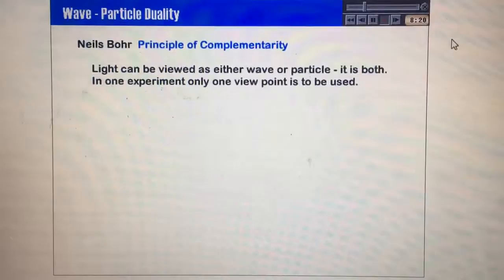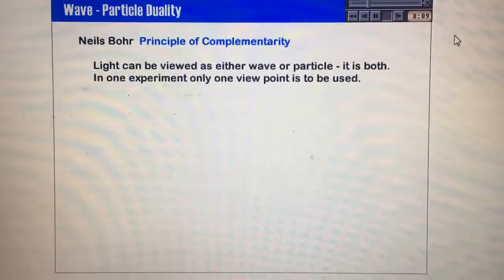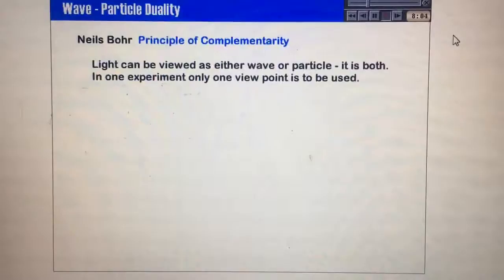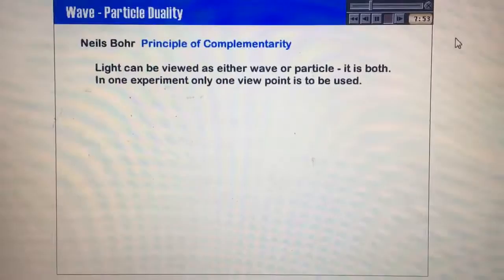Now, what he said is that light can be viewed as either a wave or a particle. It is both. So it is both a wave and a particle. Now this is a strange concept. How can something be a wave and a particle? But what he said is the context that's important. In one experiment, only one viewpoint is to be used.